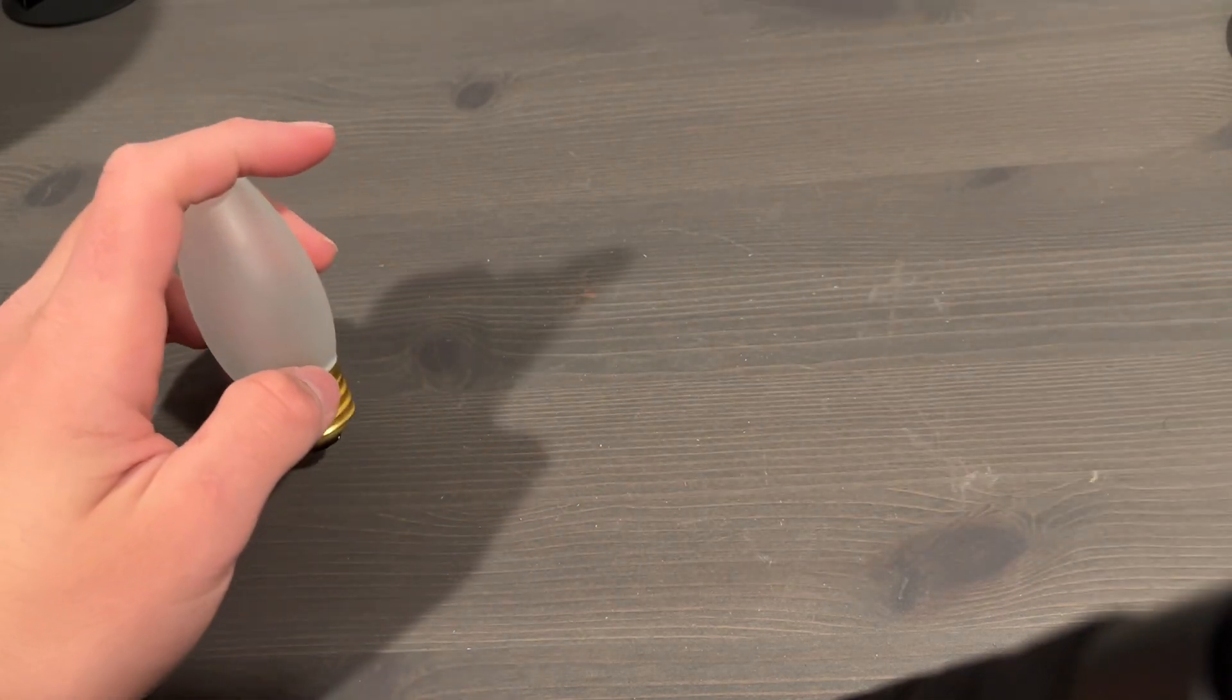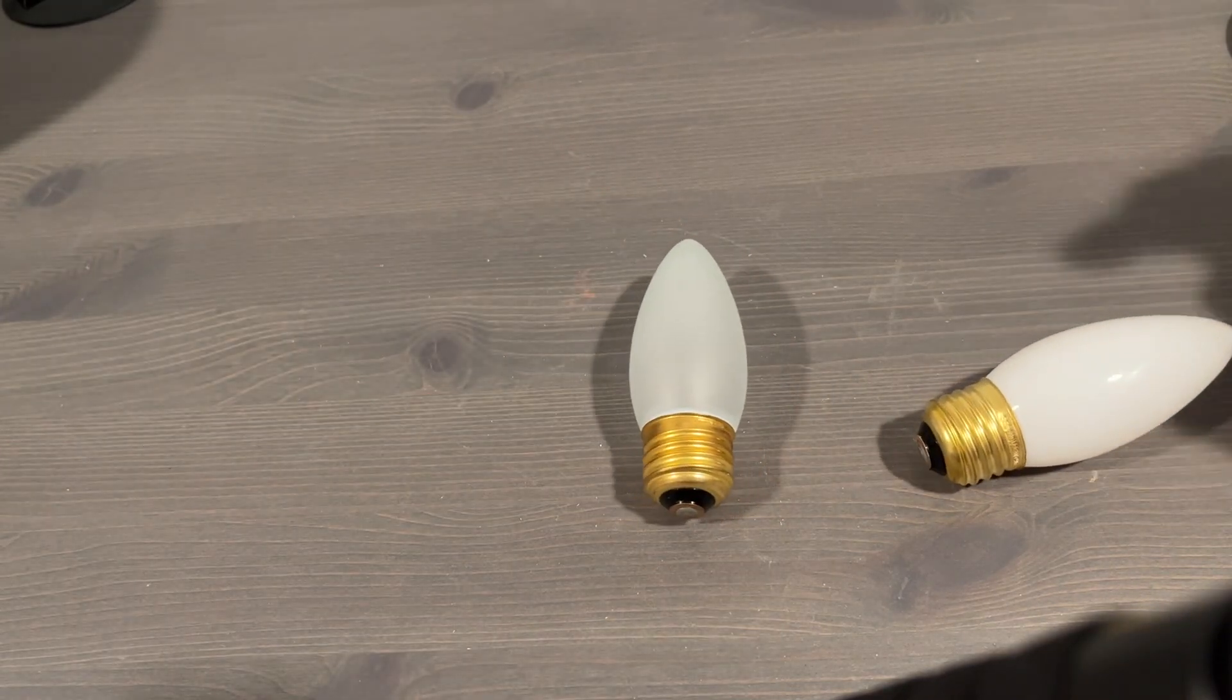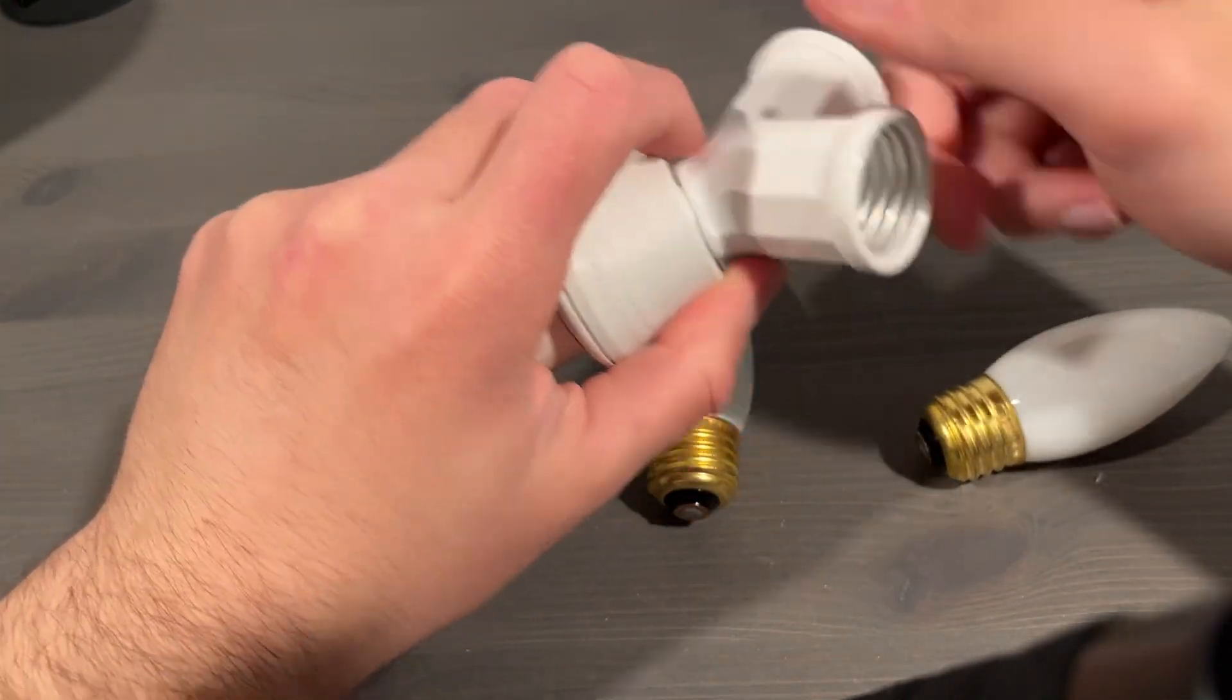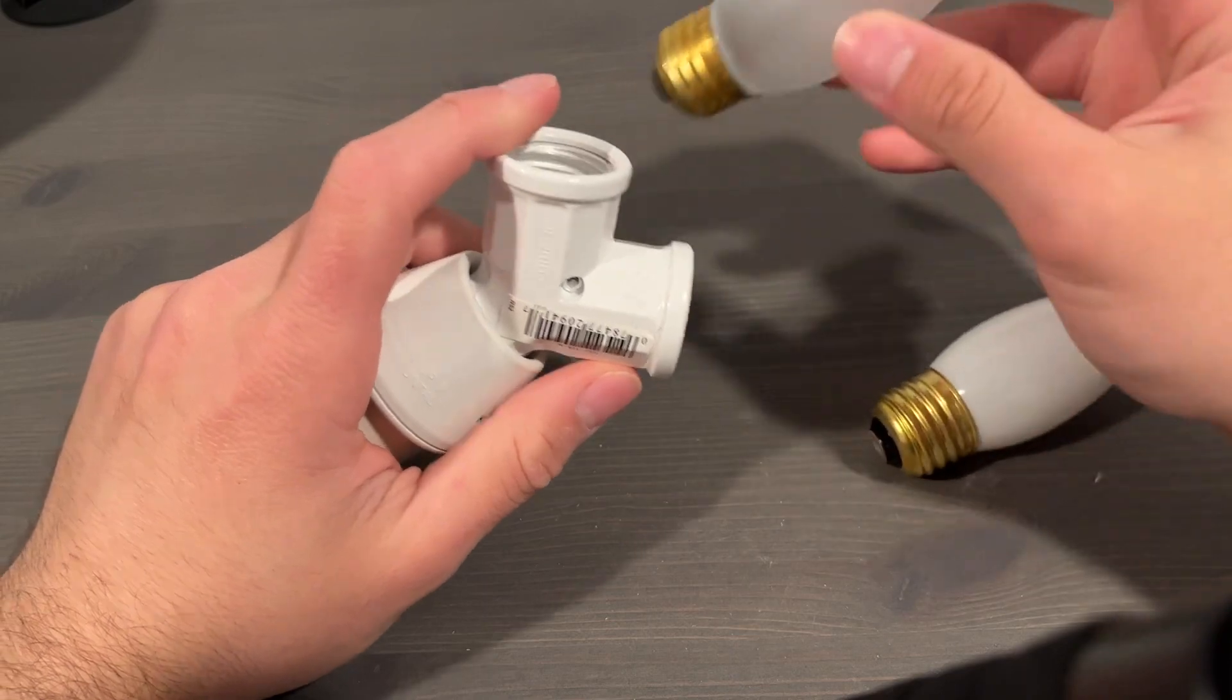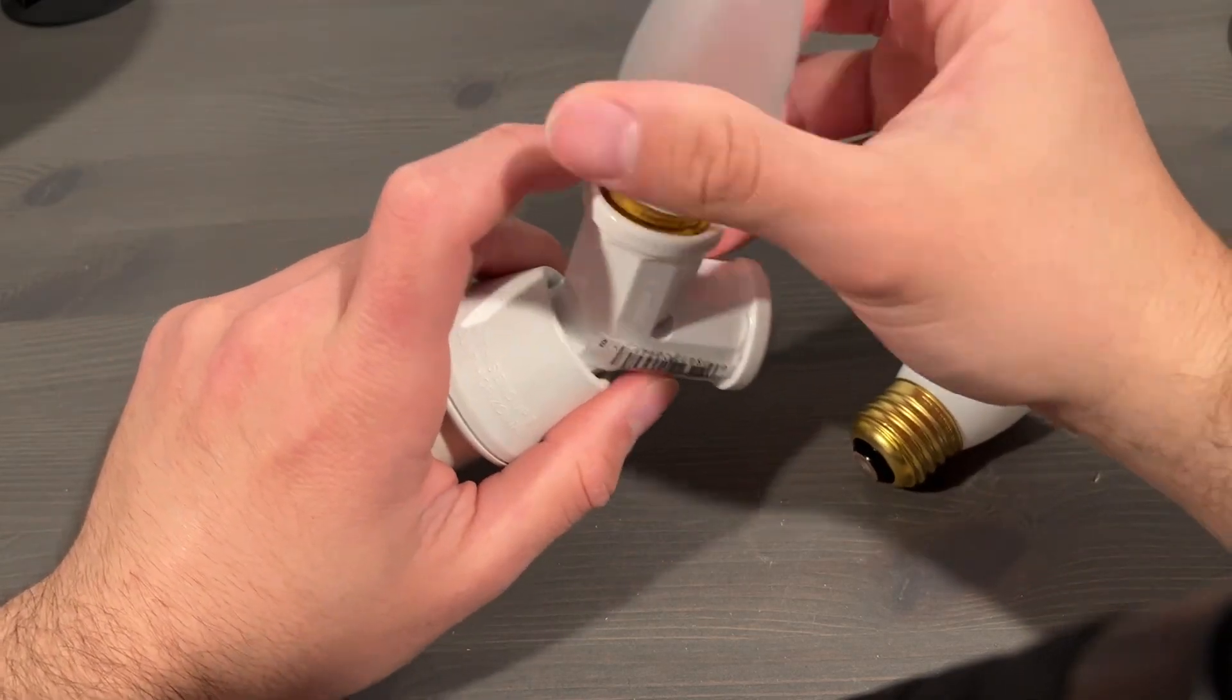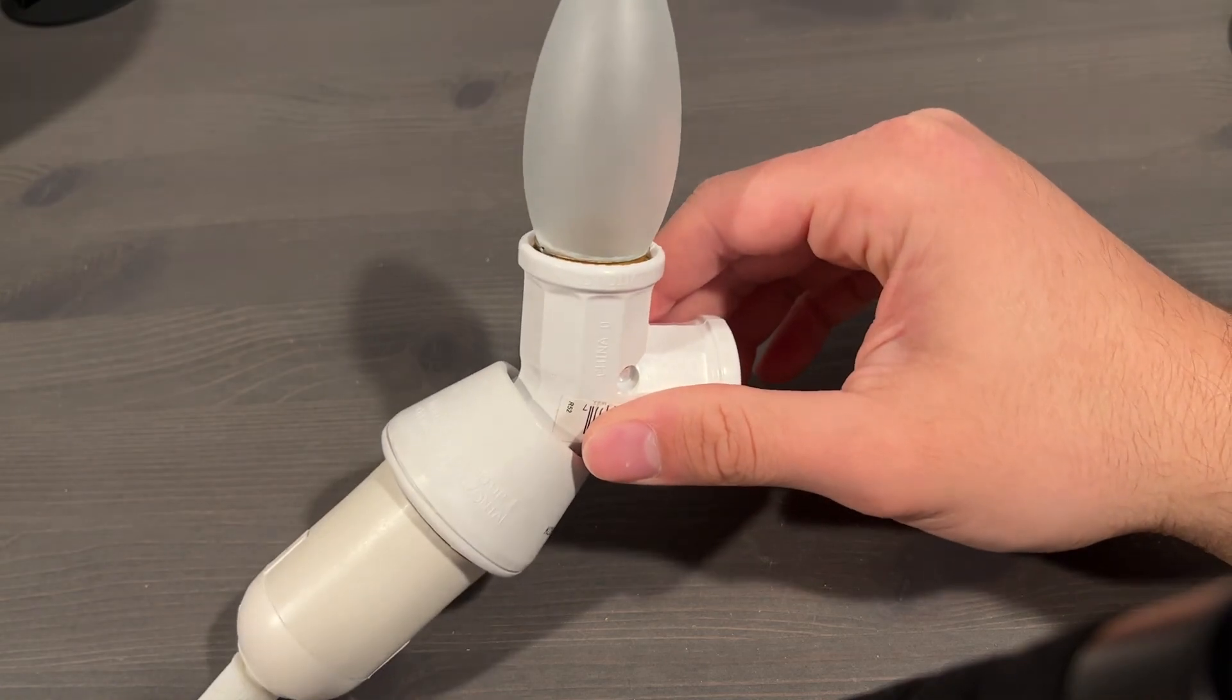And what I'm going to do is I actually have a special adapter that will allow the two bulbs to sit side by side. And then we can take a look at the differences of how they look when they're on, because there is a big difference. I'll put the frosted one in first. I have a dimmer, but it's all the way up, and let's turn it on. Here we go.